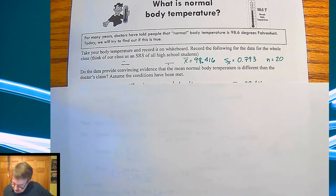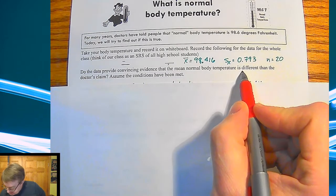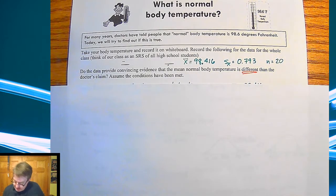So do the data provide convincing evidence that mean normal body temperature is different than the doctor's claim? Notice here it says, is it different? That means we're going to do a two-sided test. We don't care if it's higher or lower, we're just wanting to know is 98.6 actually it or is it something else?